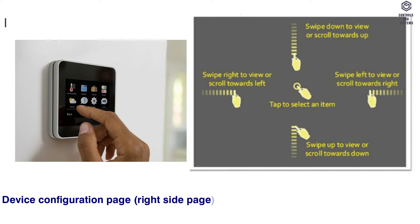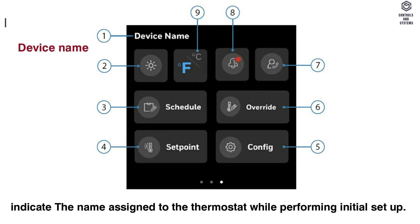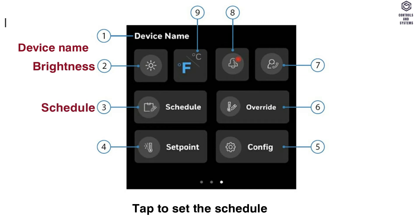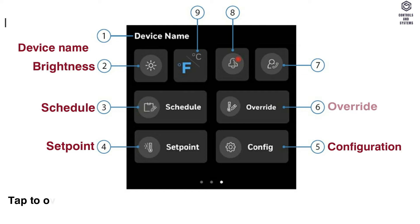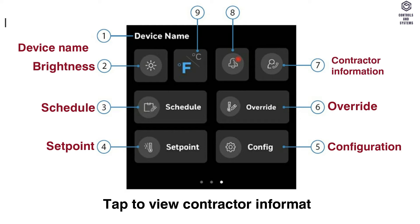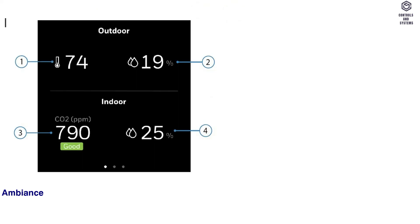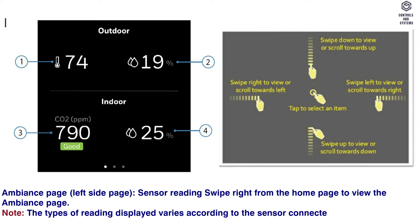Device Configuration Page (right side page): Swipe left from the home page to view the device configuration page. 1 indicates the name assigned to the thermostat during initial setup. 2 — tap to increase or decrease the brightness of the display. 3 — tap to set the schedules. 4 — tap to configure the set points of various parameters. 5 — tap to configure the thermostat. 6 — tap to override unoccupied or standby modes to allow set point adjustments. 7 — tap to view contractor information. 8 — tap to view active alarms. 9 — tap to toggle between Fahrenheit or Celsius. Ambiance Page (left side page): Swipe right from the home page to view the ambiance page. Note: the types of reading displayed vary according to the sensor connected to the thermostat.